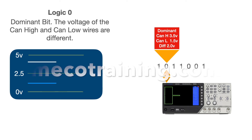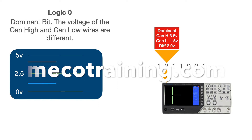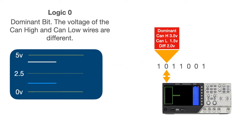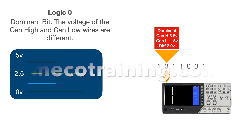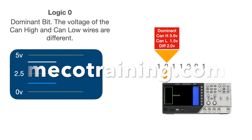The next bit in our example is a zero. In the world of NMEA 2000, logic state zero is represented by a dominant state on the bus. This means it is represented electrically by a voltage difference of two volts between the CAN High and CAN Low wires. CAN High is at 3.5 volts above ground and CAN Low is only at 1.5 volts above ground, so there is a differential voltage between the two wires of two volts.